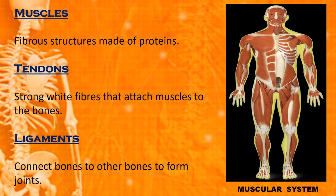You now know that the joints allow us to move our body in different ways. But for movement to happen, the bones must be connected to muscles. Now, what are muscles? Muscles are fibrous structures made of proteins.